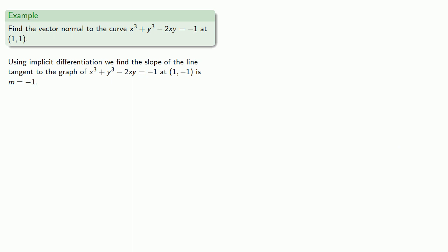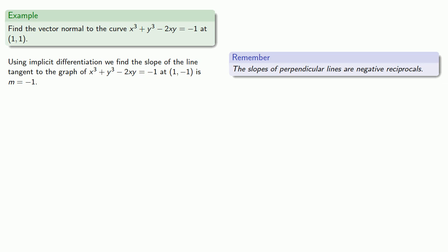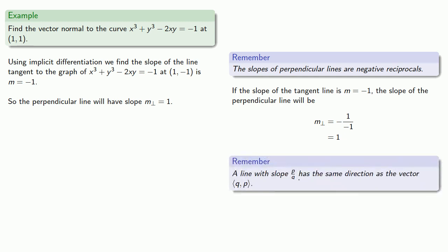Now, we want the vector normal to the line, and so we want the perpendicular line. Remember, the slopes of perpendicular lines are negative reciprocals. So, if the slope of the tangent line is negative one, the slope of the perpendicular line will be negative the reciprocal, which is one. And let's convert that into a vector. Remember that a line with a slope of p over q has the same direction as the vector (q, p). And so this slope one is going to correspond to the vector (1, 1).